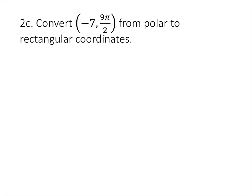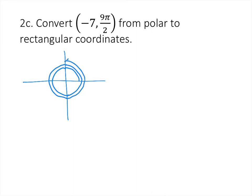For (-7, 9π/2), since 9π/2 is a multiple of π/2 (90°), we rotate 90° nine times, landing on the positive y-axis. But r = -7 means we go opposite that direction — 7 units down. So the rectangular coordinates are (0, -7); the x-coordinate is 0 and the y-coordinate is -7.